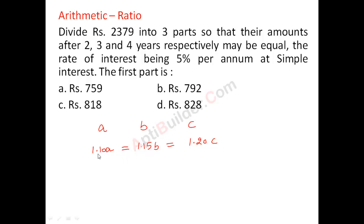So that means if I cancel this out by 5, so it will be something like 22A equal to 23B equal to 24C.